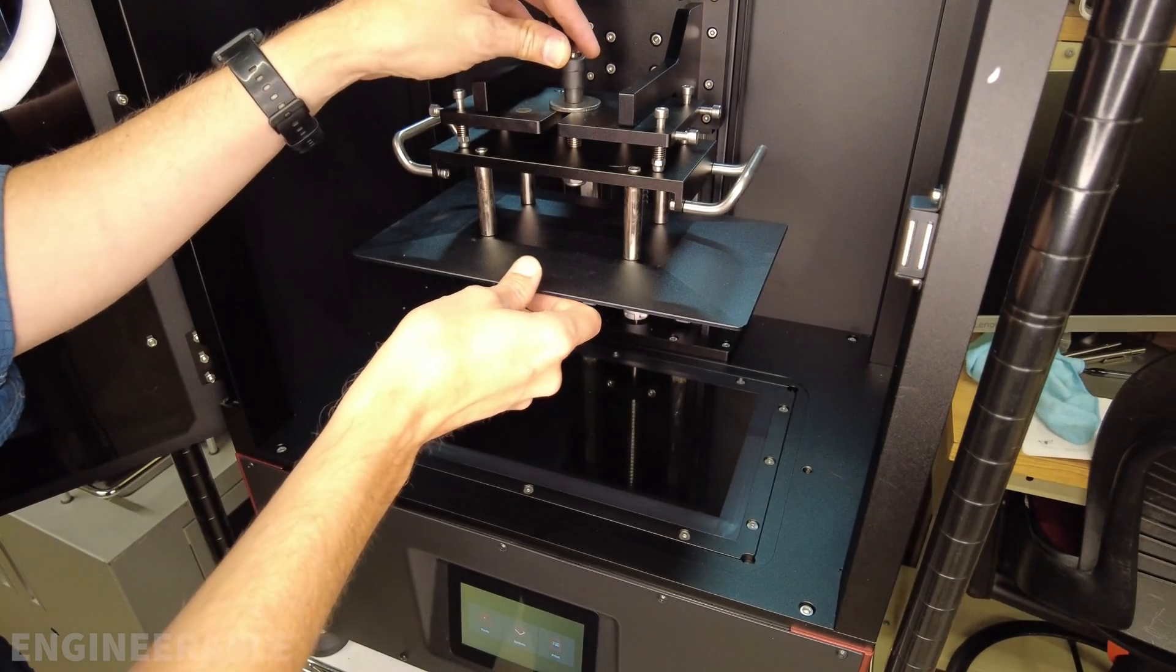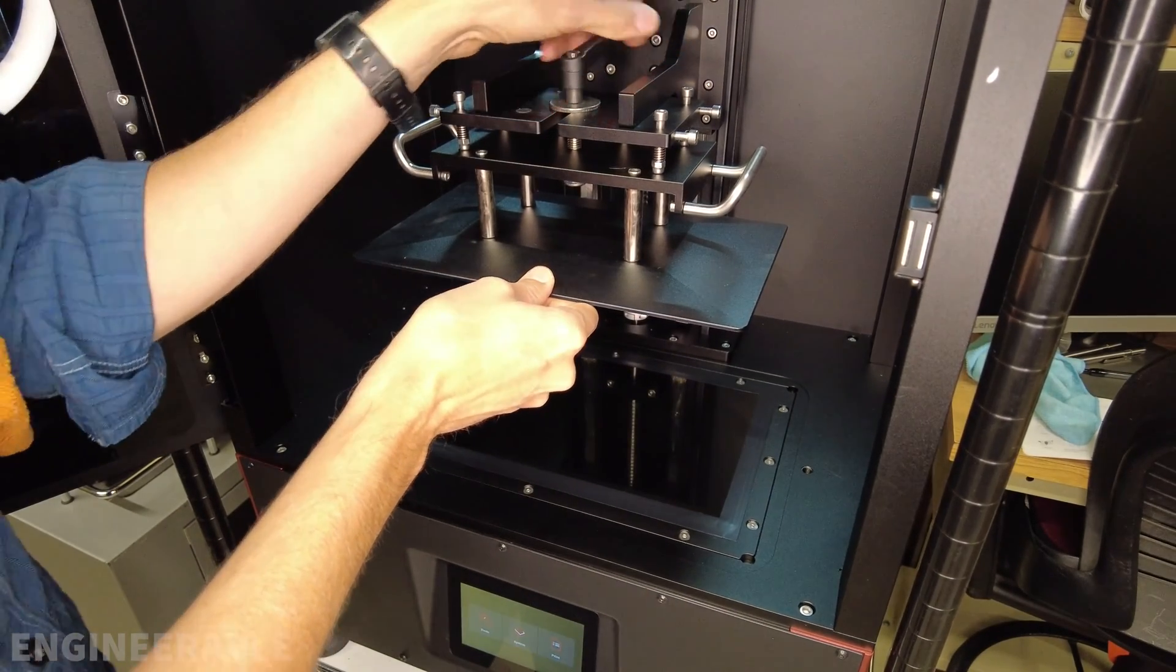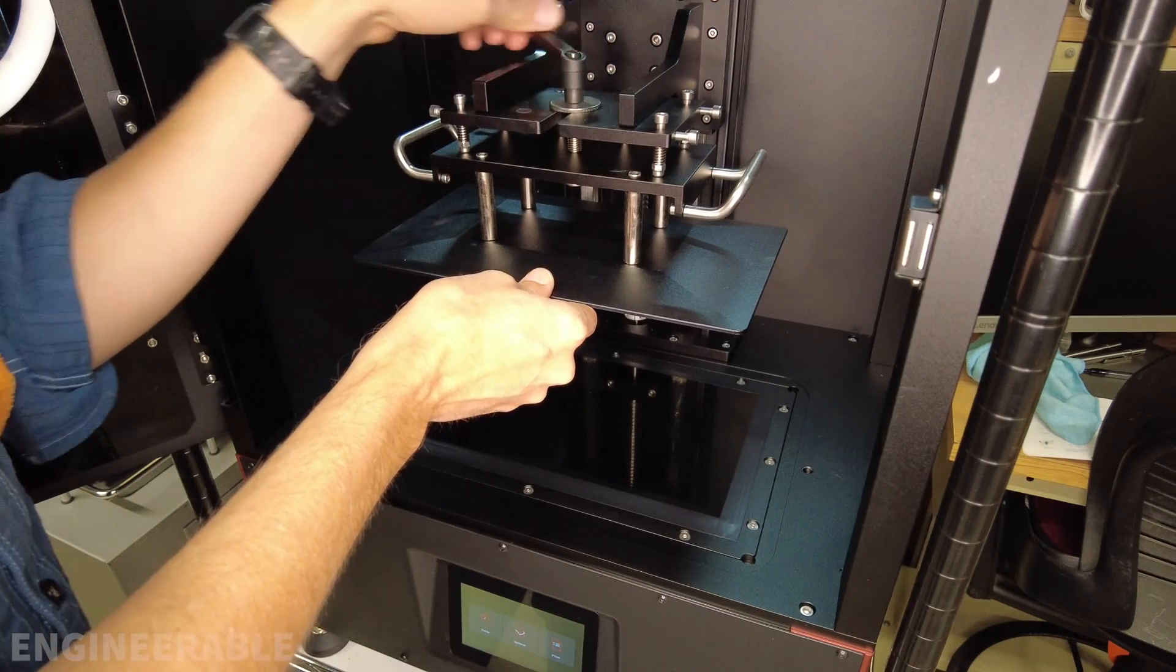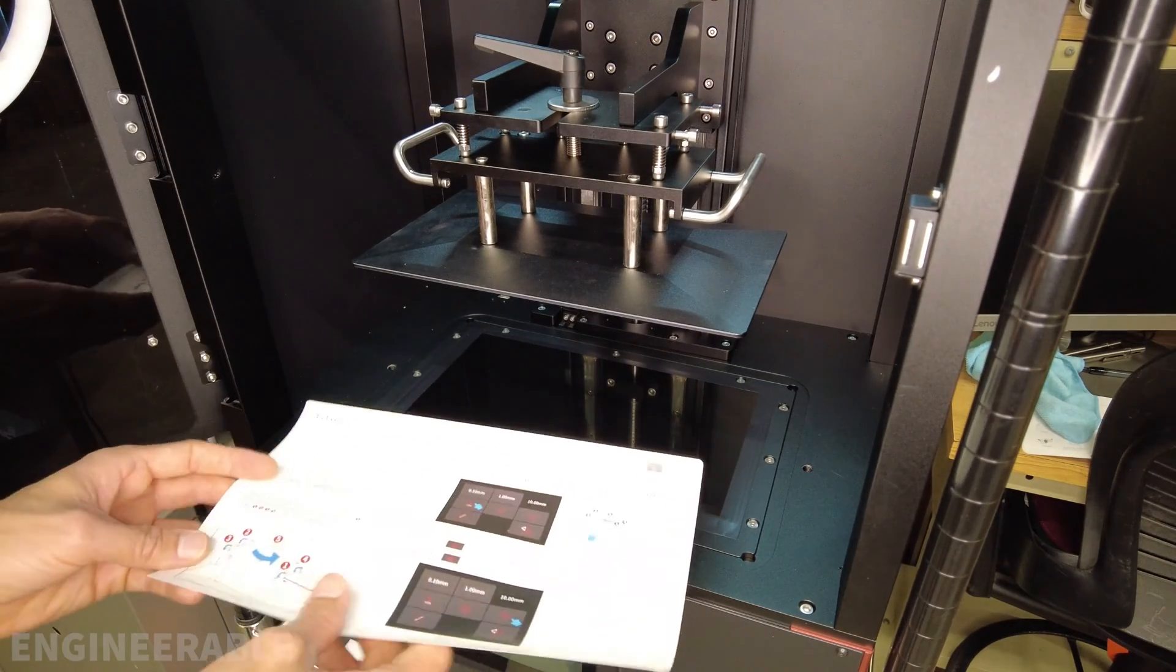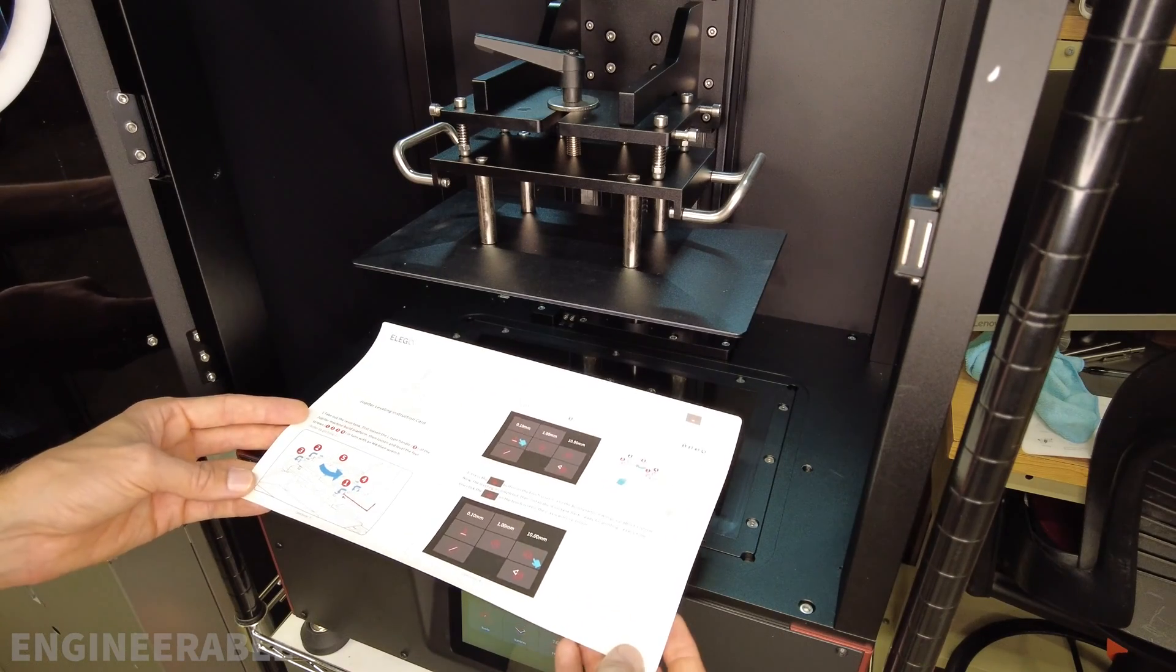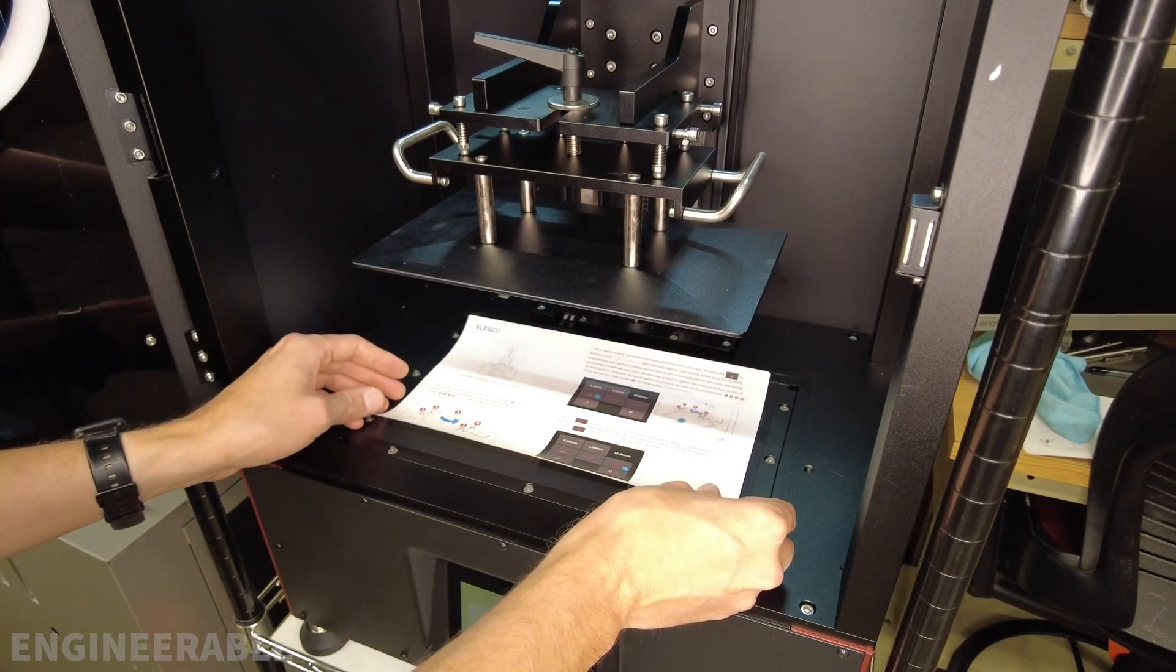Once those are loose, then you can turn the handle such that it is also all the way loose. Make sure that the LCD screen is clean and free of any debris or resin. Take the Jupiter leveling card, which is this instruction card.